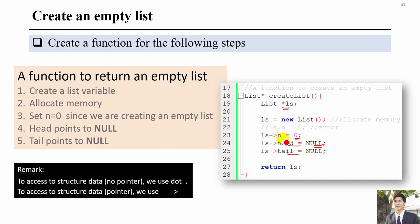To access members of a struct through a pointer, we use the arrow symbol '->' instead of dot '.'. The steps to create an empty list are: create the list variable, reserve memory with allocation, then set initial values for n, head, and tail.